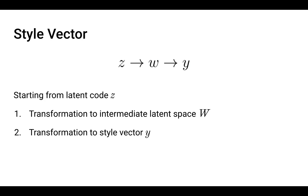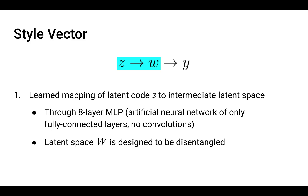The style vector, starting from the latent code, is first transformed into an intermediate latent space W, and then further transformed to become the style vector Y. The first part of this transformation is essentially a learned mapping of the initial latent code Z to the intermediate latent space W, done through an eight-layer multi-layer perceptron — fully connected layers, no convolutions. Eight layers is a parameter you could change if training your own models; it was found to have a good trade-off between cost and benefit. This latent space W is designed to be disentangled.